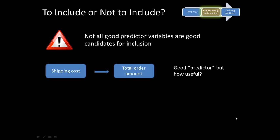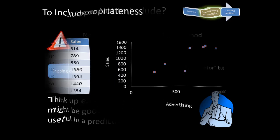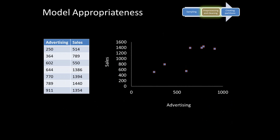This is a good predictor but it's not really useful. It's a good point at which to stop and think of examples of other variables which might be good predictors but not really useful in a predictive model. Now we want to look at another important characteristic — another important property of models — which is how appropriate our models are. Remember, our process is: we partition the data into training and validation partitions, we build a model with the training partition, and then we apply the model to the validation partition.